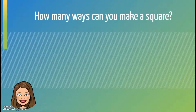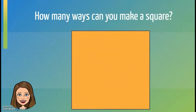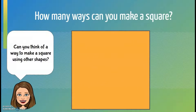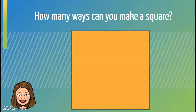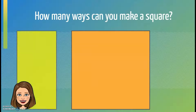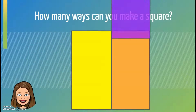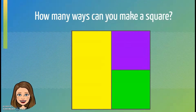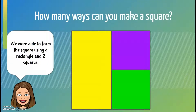So let's start with the square. Can you think of a way to make a square using other shapes? Well, there's a rectangle and two squares.